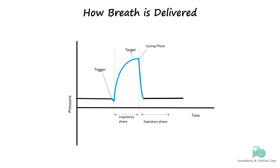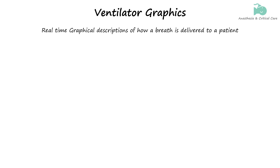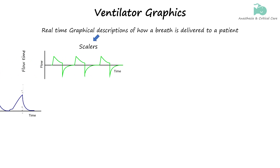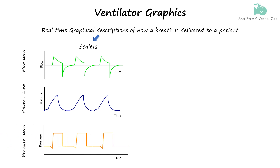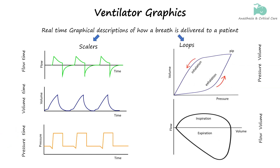Any combination of these variables can define the type of breath delivered by the machine. Ventilator waveforms, or ventilator graphics, are graphical descriptions of how a breath is delivered to a patient. These include three scalars — flow over time, volume over time, and pressure over time — and two loops: pressure-volume and flow-volume loops.